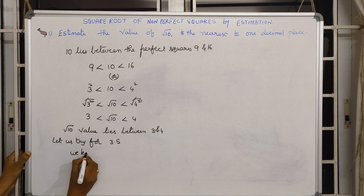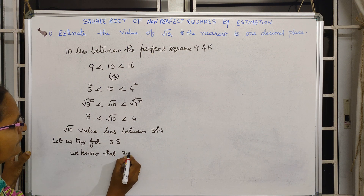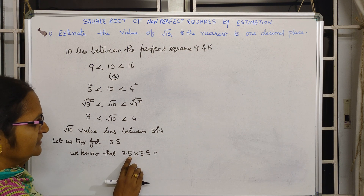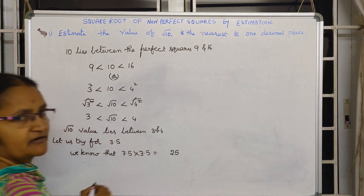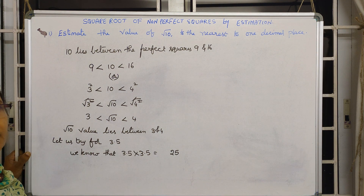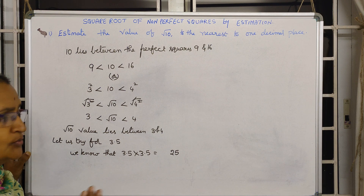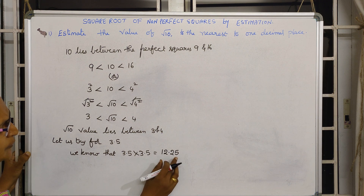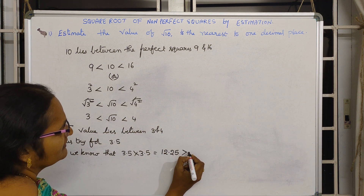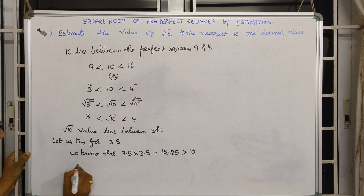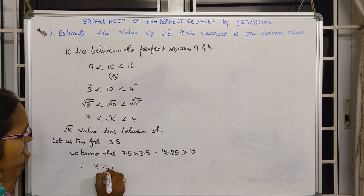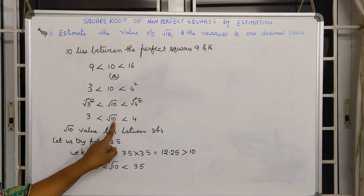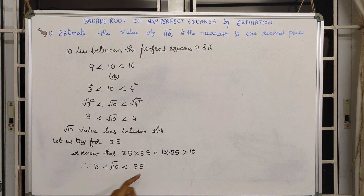We know that 3.5 times 3.5 — whenever a number ends with 5, there is an easy method. First, 5 times 5 is 25, write that. Then 3, and the next number after 3 is 4, so 3 times 4 is 12. Therefore 3.5² = 12.25. Since 12.25 is greater than 10, we know root 10 is less than 3.5. So: 3 is less than root 10 is less than 3.5.